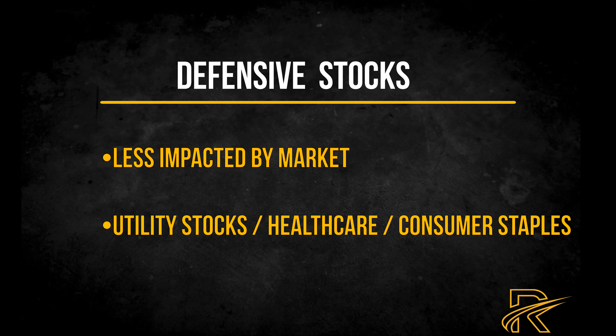Safe stocks, also known as low-volatility stocks, are stocks whose share prices make relatively small movements up or down compared with the overall stock market. They typically operate in industries that aren't as sensitive to changing economic conditions — you'll find them mostly in the utilities sector. They often pay dividends as well, and that income can offset falling share prices during tough times.